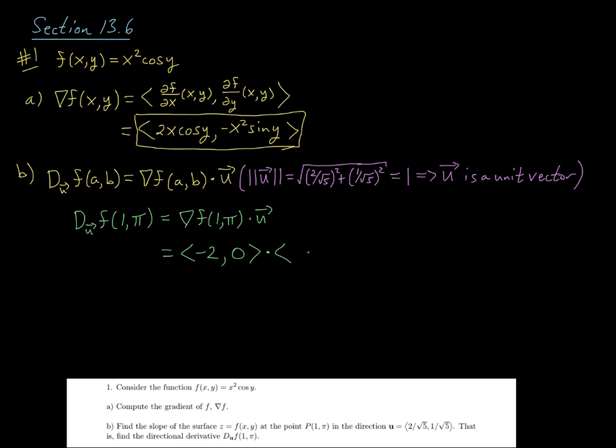Then I'm going to take the dot product of this with our vector 2/√5 and 1/√5. This dot product would come out to be -4/√5 plus 0 times 1/√5, and that's just 0. So this in fact is the value of our directional derivative.